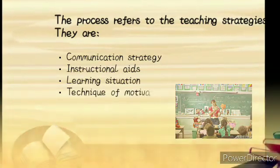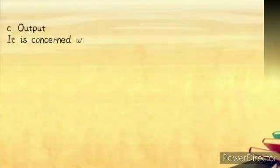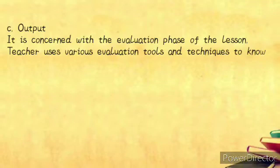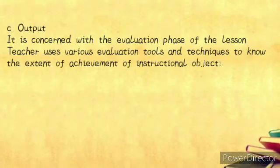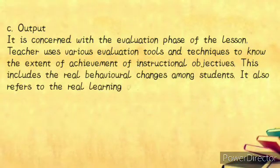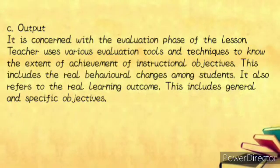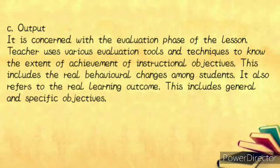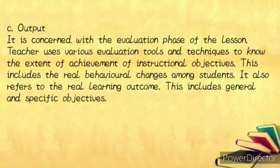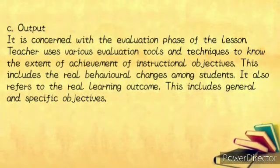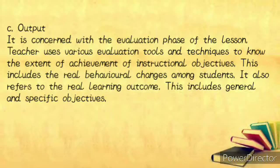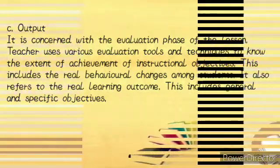The last step is Output. It is concerned with the evaluation phase of the lesson. The teacher uses various evaluation tools and techniques to determine the extent of achievement of instructional objectives. This includes the real behavioral changes among students, refers to the real learning outcome, and includes both general and specific objectives.